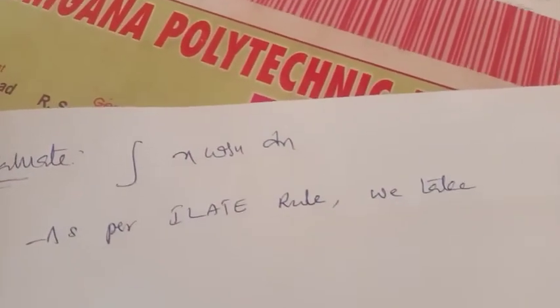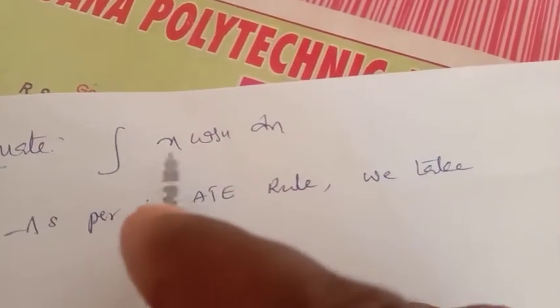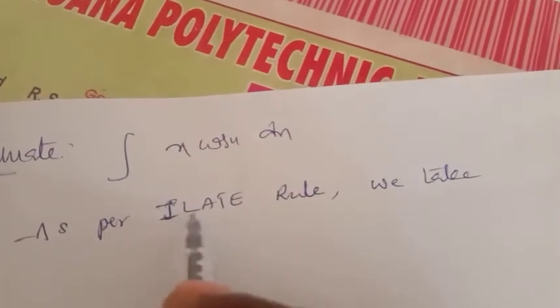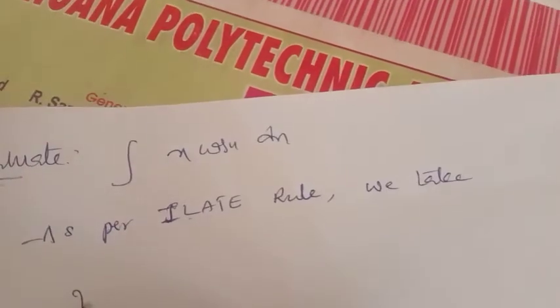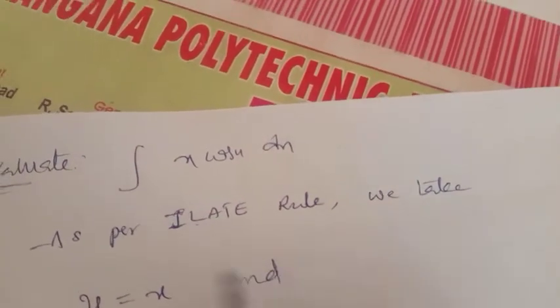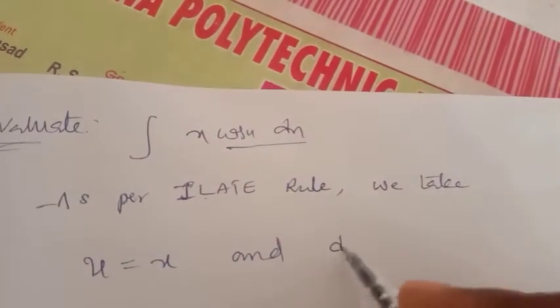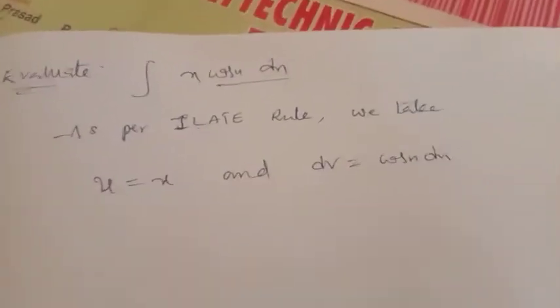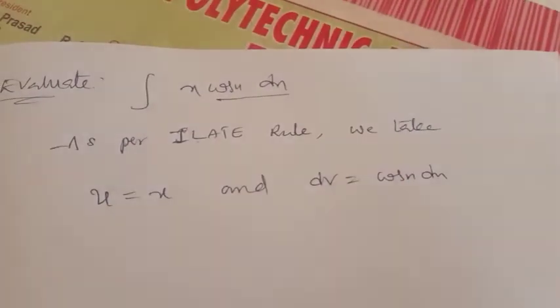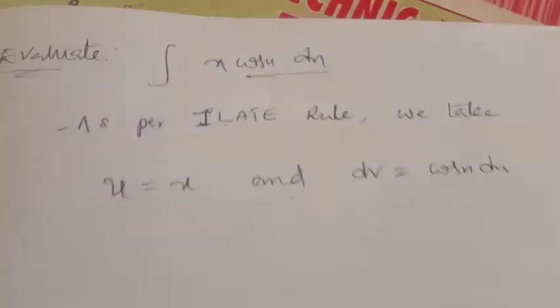As per the ILATE rule, there is no inverse trigonometric function and no logarithmic function in this problem. We have an algebraic function, so we take u equal to x. And the remaining value is dv equal to cos x into dx. So first function equals x and second function equals cos x dx.